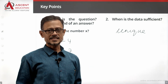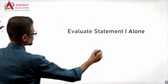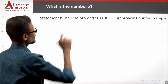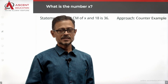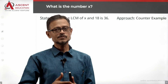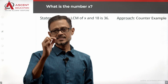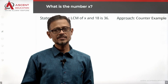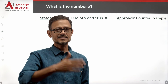On this basis, let's evaluate Statement 1 alone. Statement 1 says: the LCM of x and 18 is 36. The question is whether x has one value, or whether more than one value of x can have an LCM of 36 with 18.